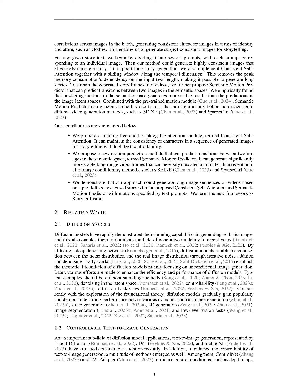In summary, we introduce the rapid development of diffusion models for content generation like images, 3D objects, and videos, showcasing superior performance compared to previous GAN-based methods. While existing models struggle with generating subject-consistent images and videos for storytelling, we propose consistent self-attention in Story Diffusion to maintain character consistency while maximizing user control via text prompts. Additionally, we present the semantic motion predictor module to predict transitions between images in the semantic space, enabling stable video frame generation for long stories, outperforming methods like SANE and Sparse CTRL.